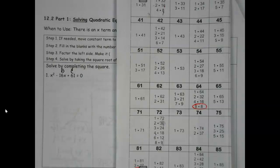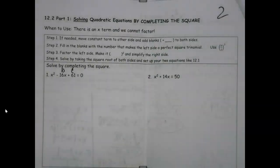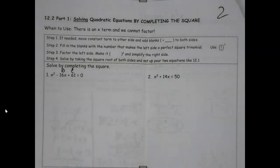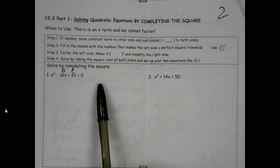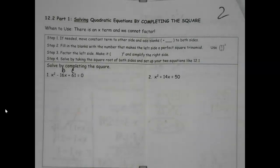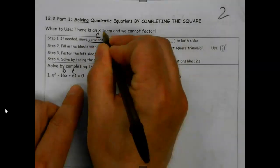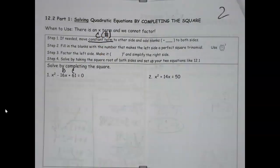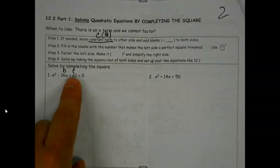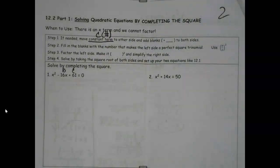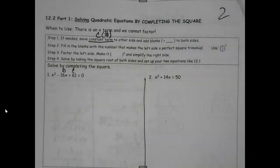So what the heck? We have to have another option if factoring doesn't work, and that's what we're going to chat about today. If needed, move the constant term - and you're like, okay, what's the constant term? The constant term is the plain old number, what we called c before - to the other side, and add blanks.